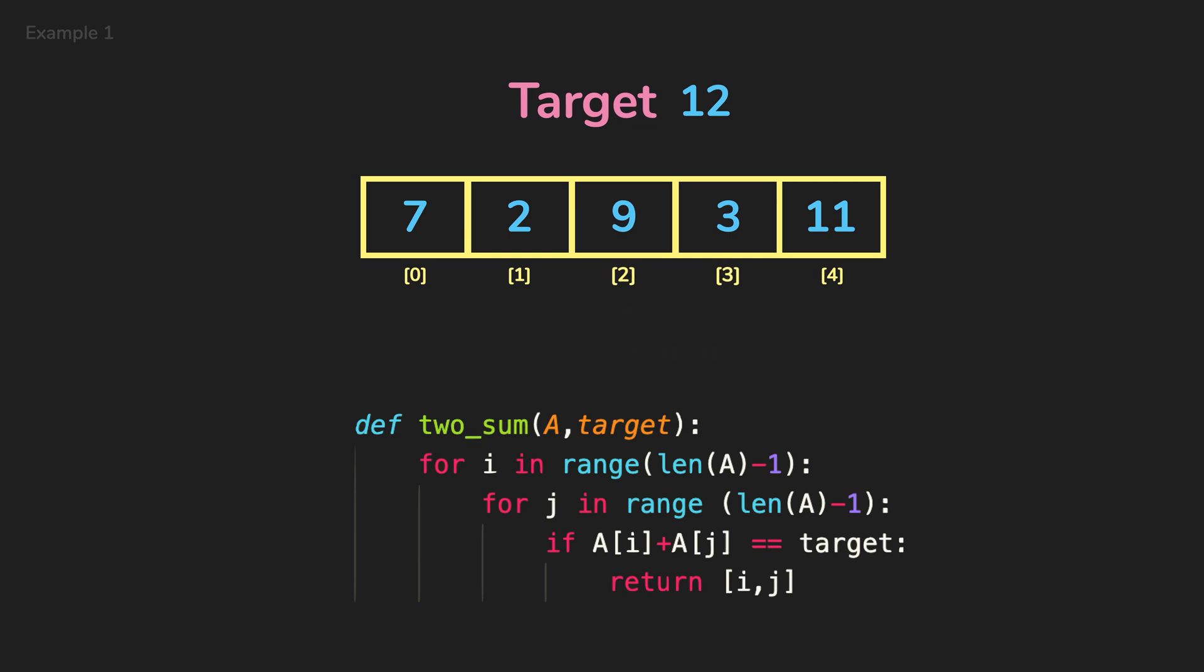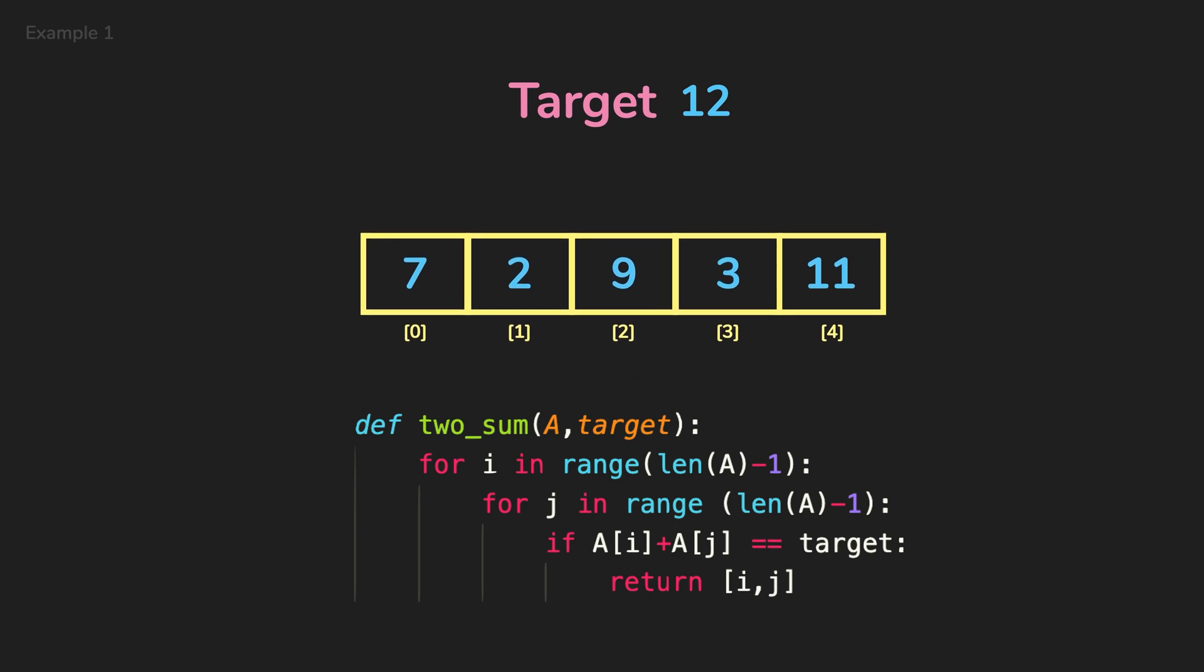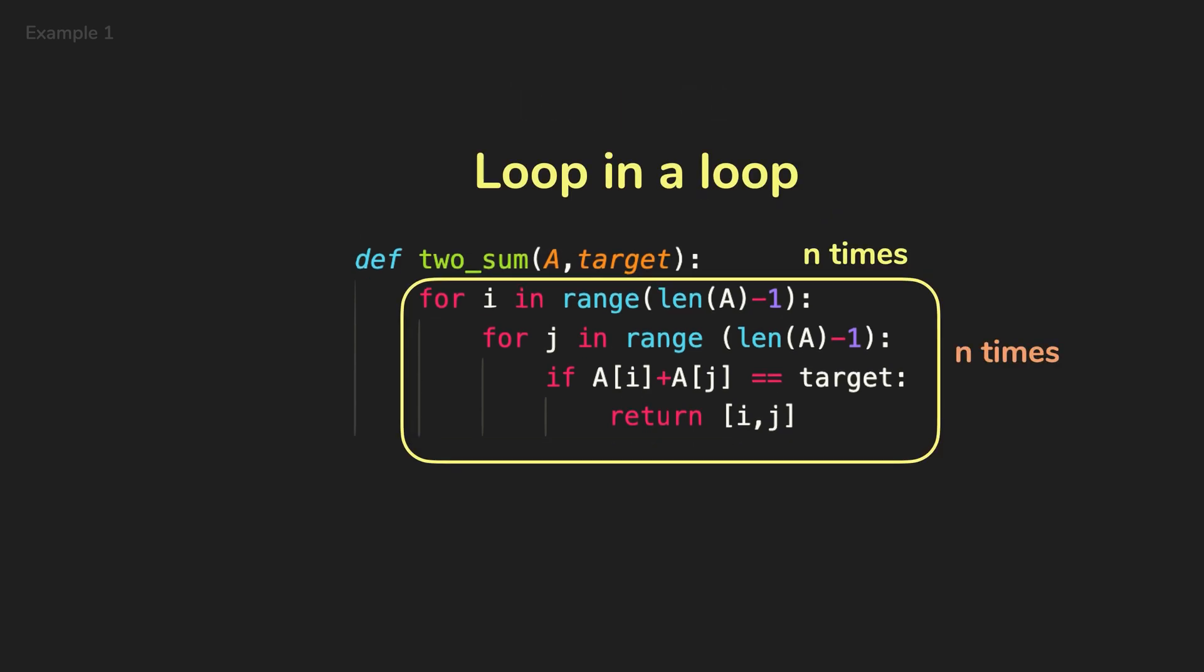If the target is 4, the function is looping each index of the array. And for each index, it loops again to see if they add up to the target. So it's a loop in a loop. This algorithm will have a quadratic time complexity.